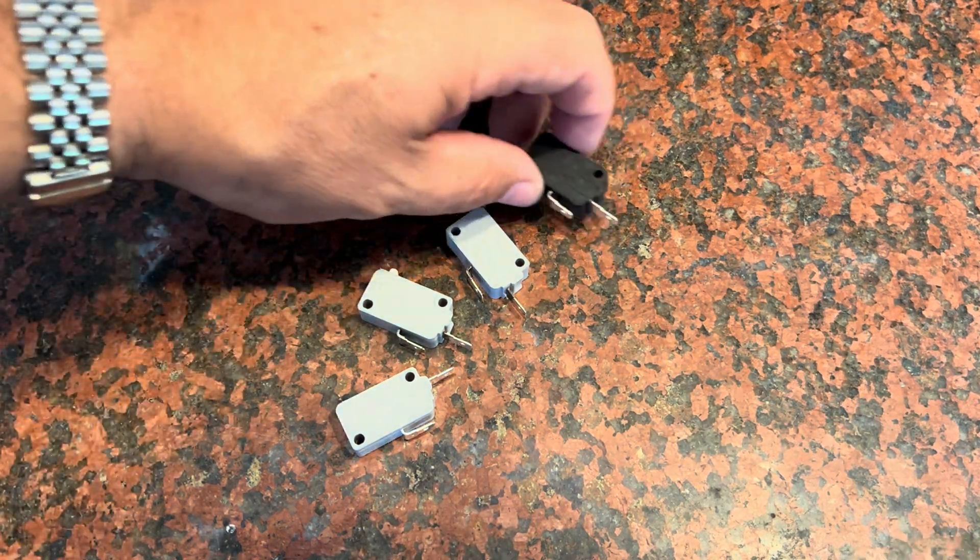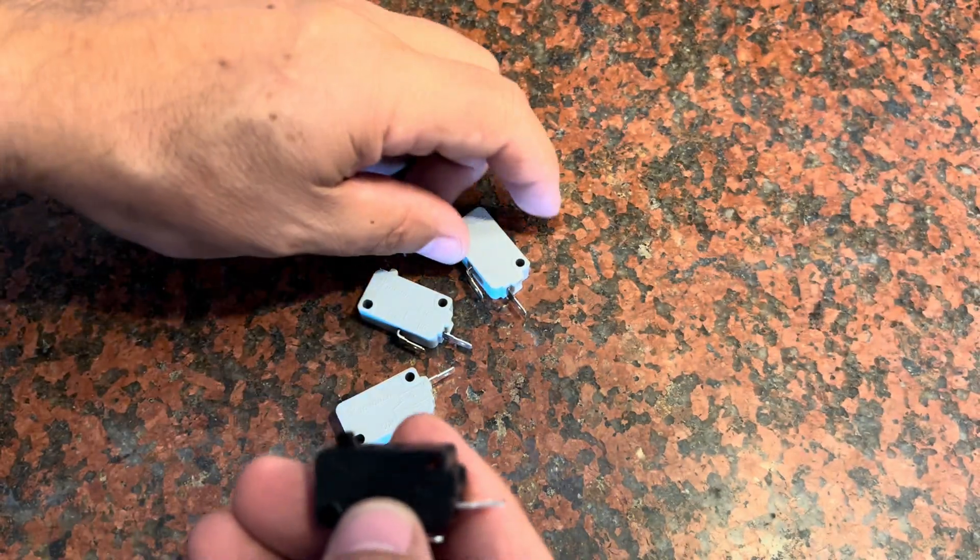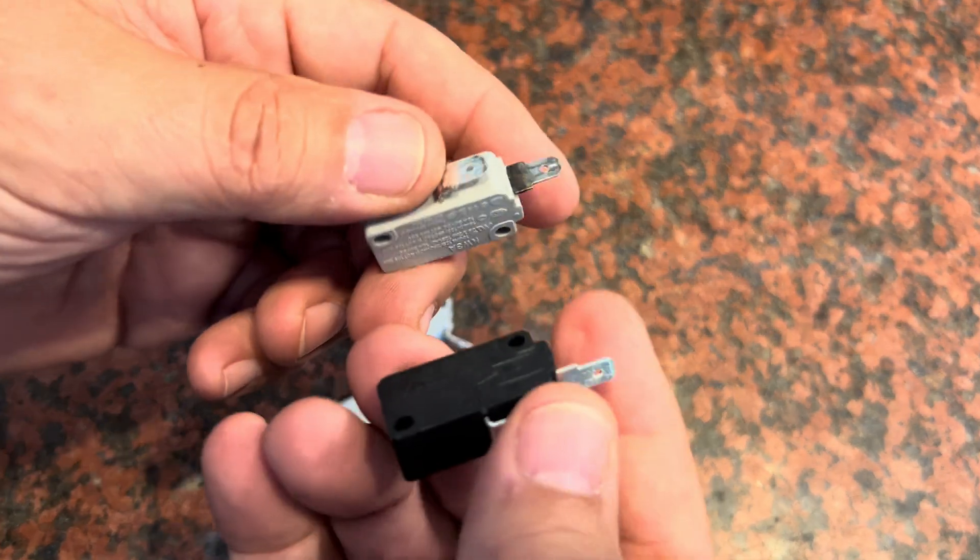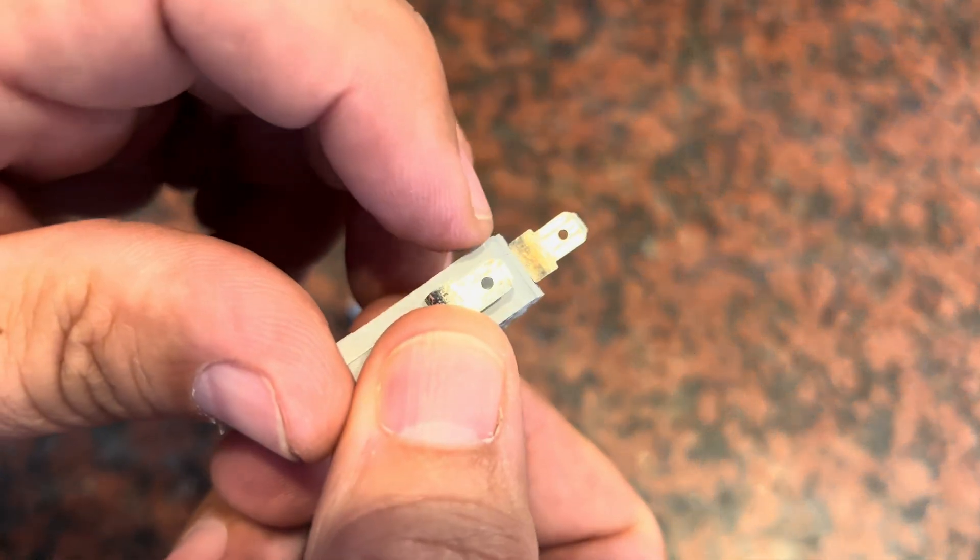I'm going to show you something about these microwave switches that may not be very apparent at first. When you're replacing these switches they can go bad. You can see this one's got some burn marks here.